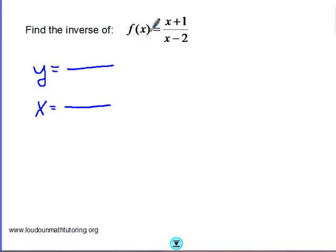The first step, let's change our f of x and rename our output and just call f of x y. y is just another name for f of x. So y equals x plus 1 divided by x minus 2.